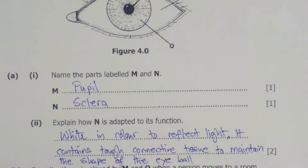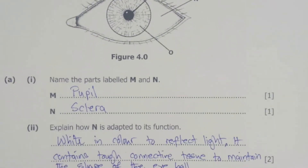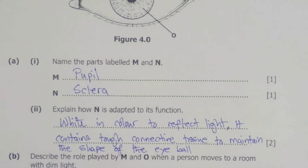The tough connective tissue maintains the shape of the eyeball. The sclera is white in color so that it can reflect light so that no light goes into the eyeball. Apart from that, it has got tough connective tissue which maintains the shape of the eyeball. It is also opaque in that it does not allow light to enter — so that is also another adaptation.